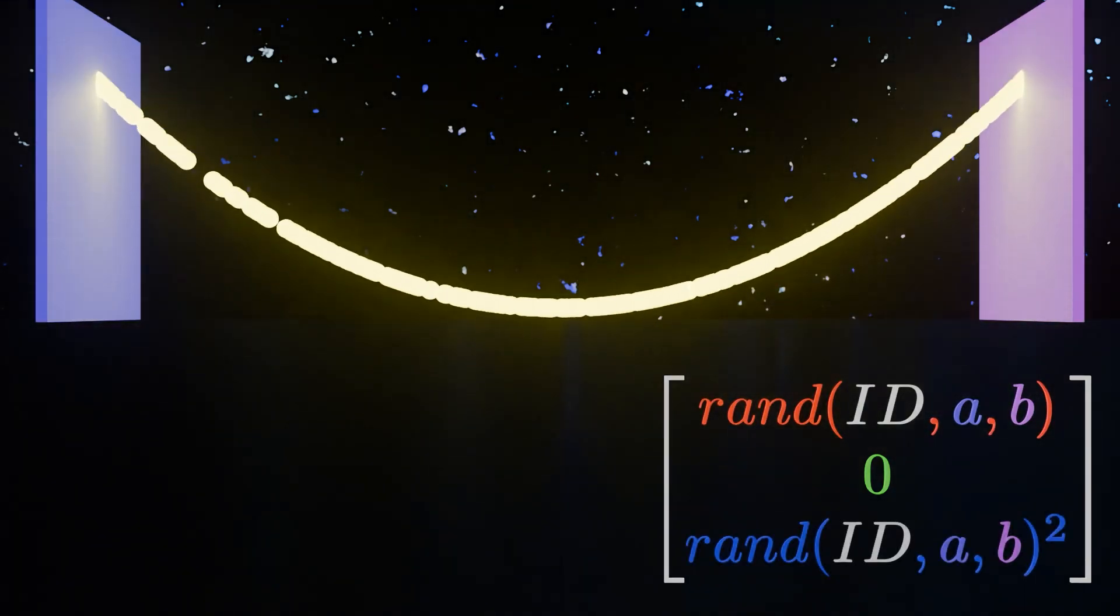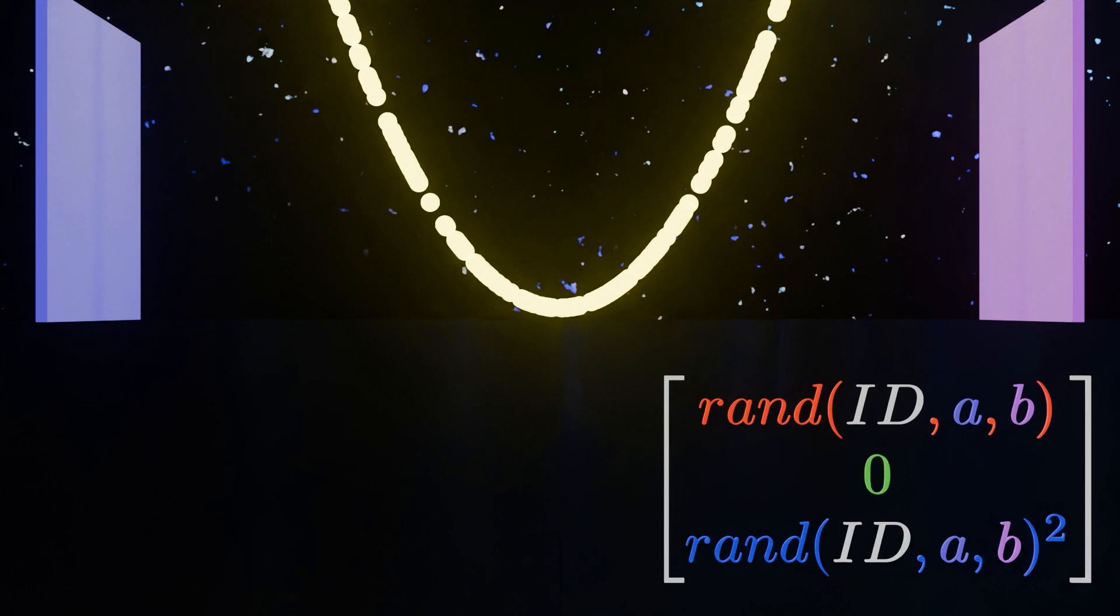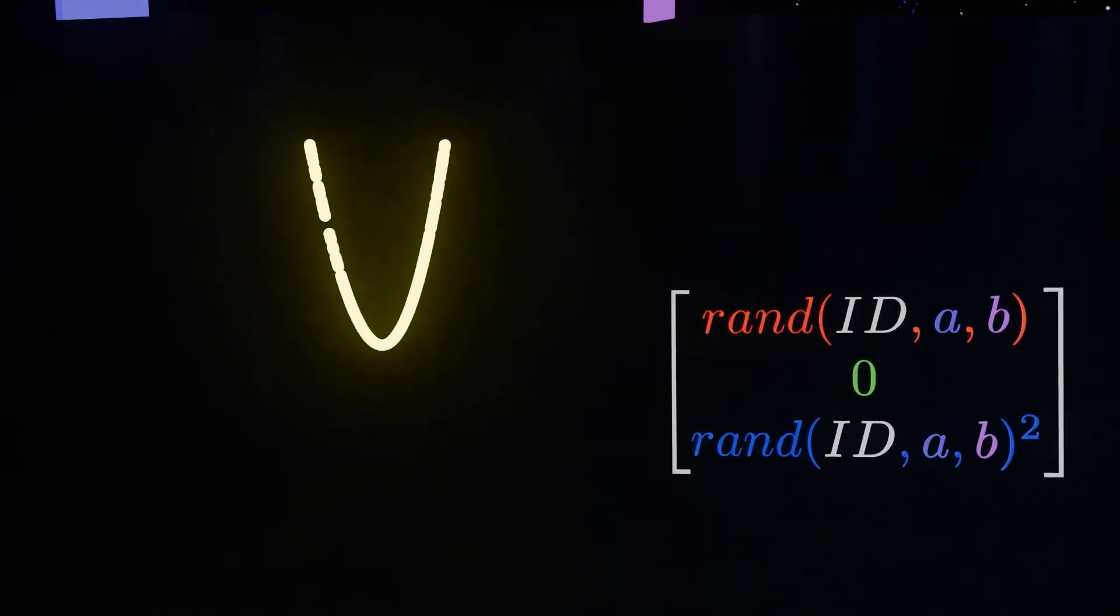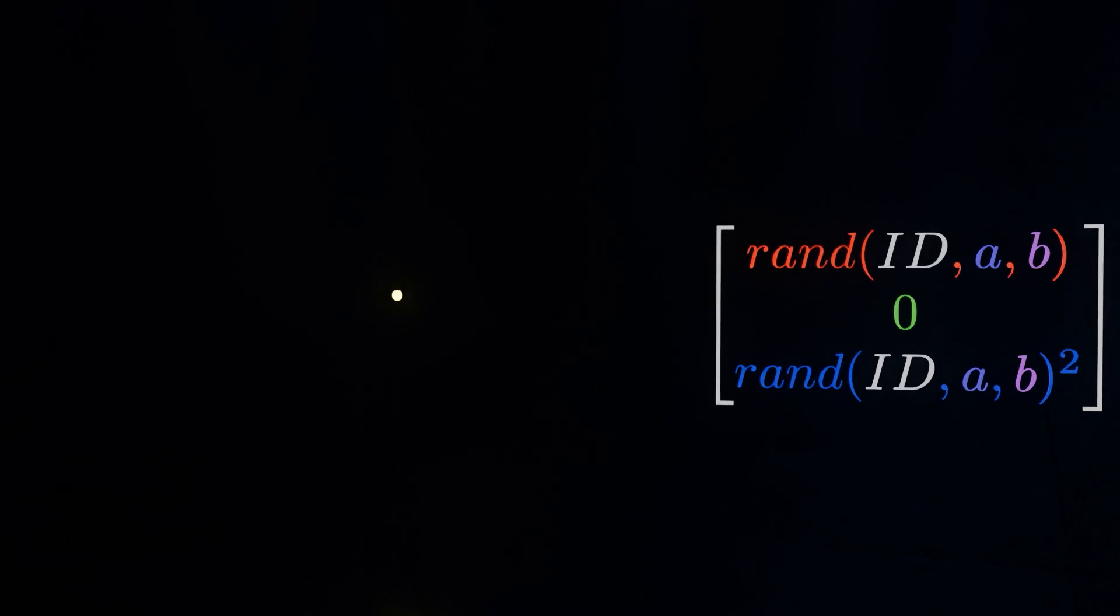Now from this we could already have some fun. If we set the y to 0 for example, and if we set the x to a random number, and the z to the same random number squared, then what we get is a nice parabola. And by now I think you should understand how it works, and if you don't, then just keep watching the video.